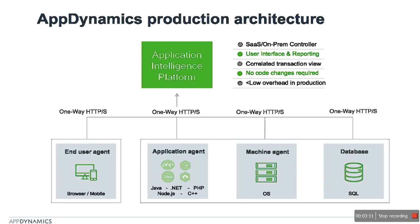The second part of the application architecture, the AppDynamics controller, is available on-premise and as a SaaS version. The data slices sent by the agents are collated by the controller to provide an in-depth view of your transactions via a browser-based user interface. The controller is massively scalable, resulting in hardware cost savings. For example, Cisco deployed 10,000 agents in 10 days for 10,000 JVMs across 23 data centers across the globe.